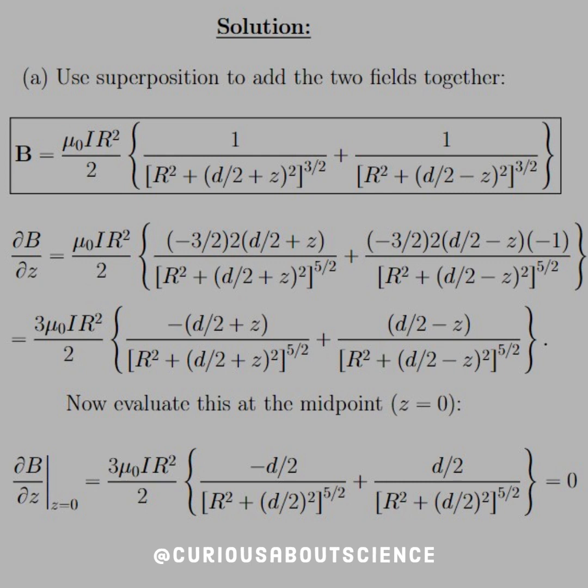You see that we have B equals mu naught I R squared divided by 2 times 1 over [R squared plus (d/2 + z) squared] to the 3/2 power, because that's the separation distance. Makes sense. And then the same thing but minus z since we're below. Okay, makes sense there as well.